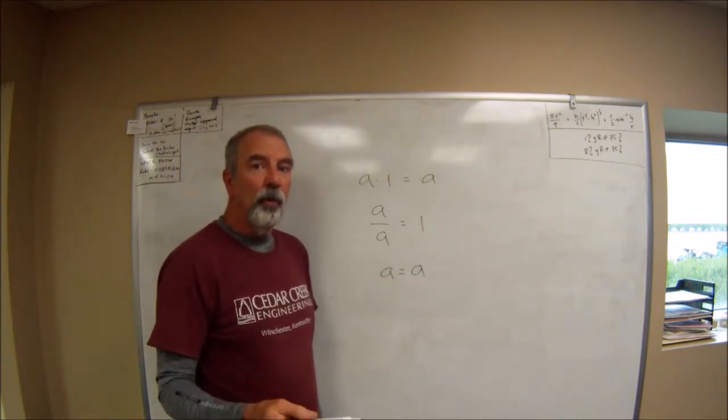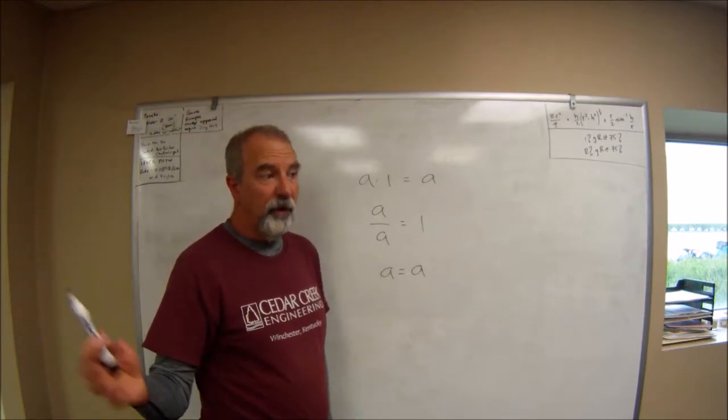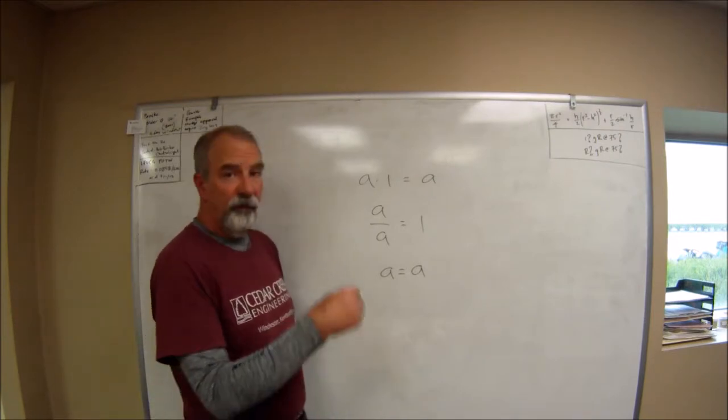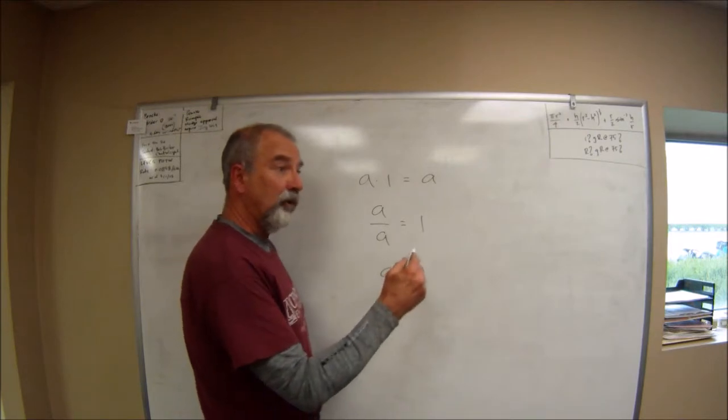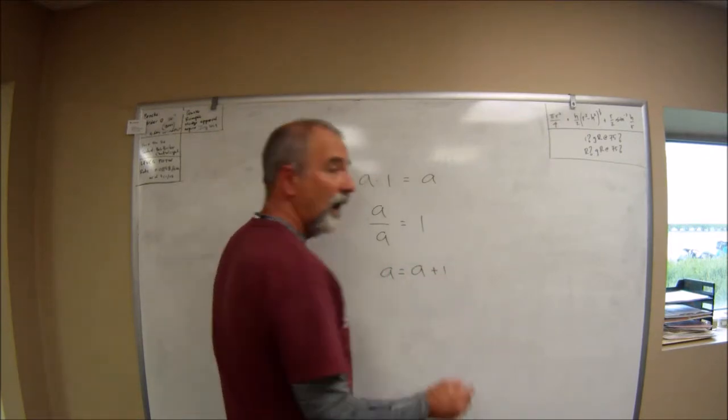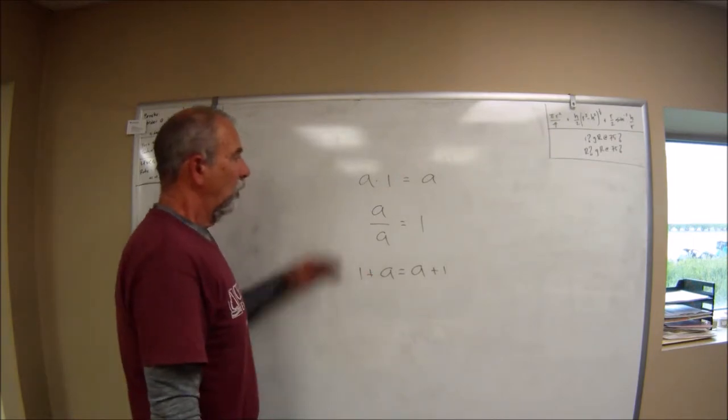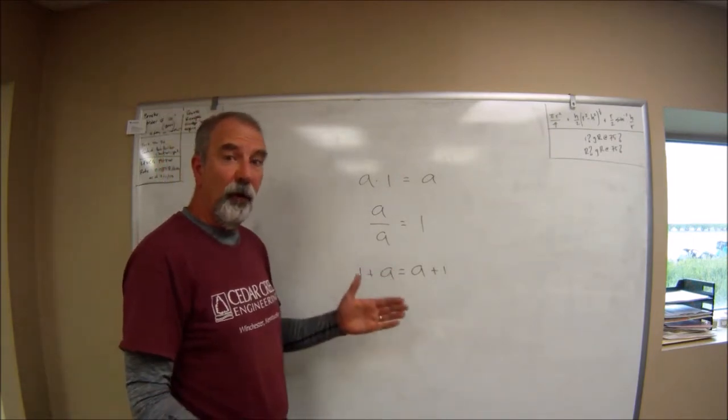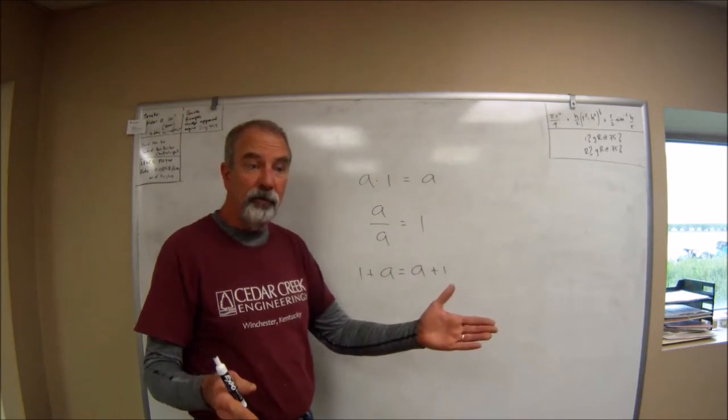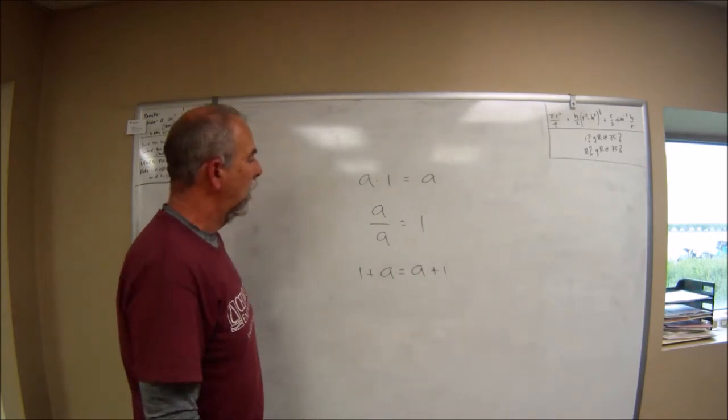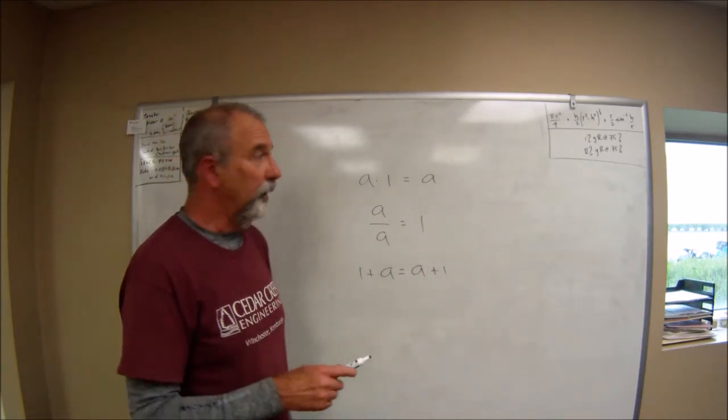And the third rule, which can have an infinite number of variations, is that if you start out with an equality and you do something to one side, you have to do the same thing to the other side. Those three rules are going to be sufficient for handling all the conversions we do today, and they're also going to be necessary.